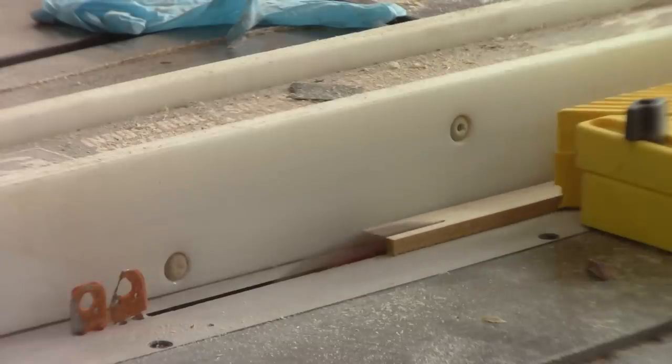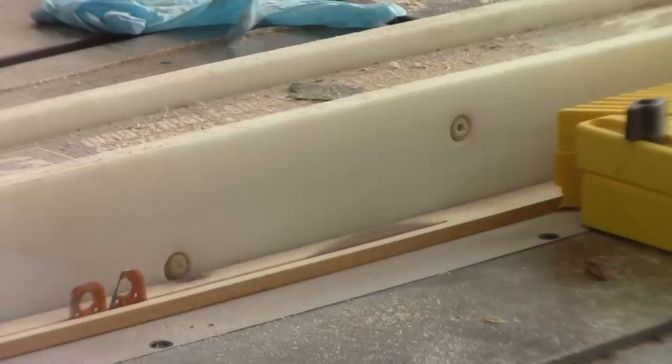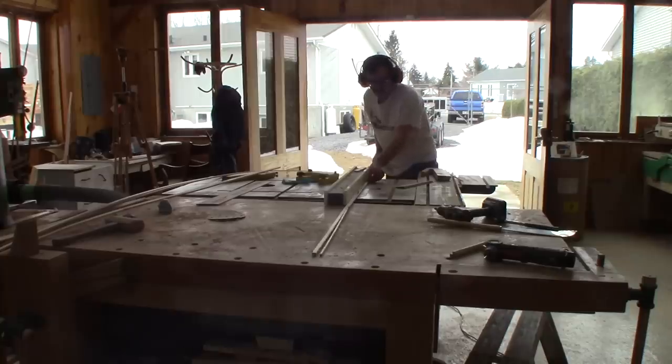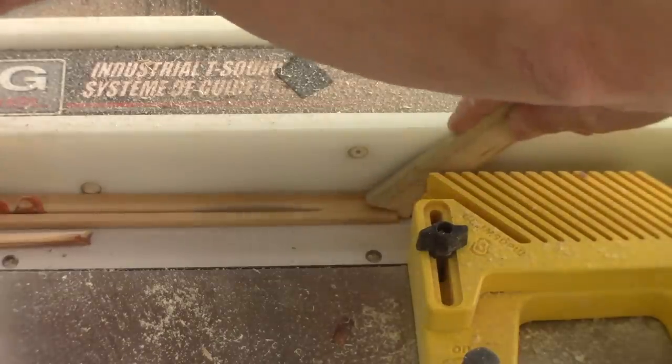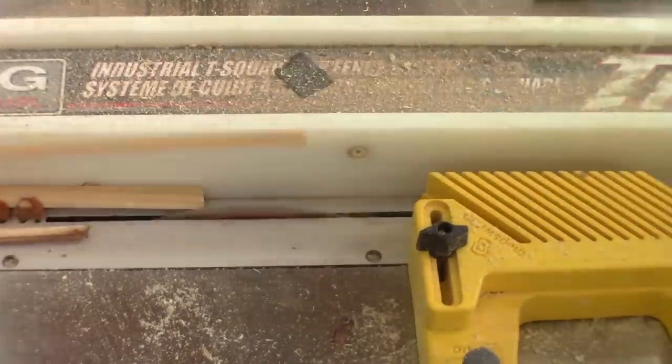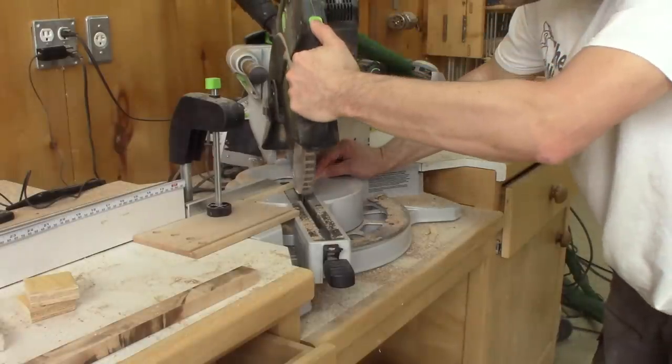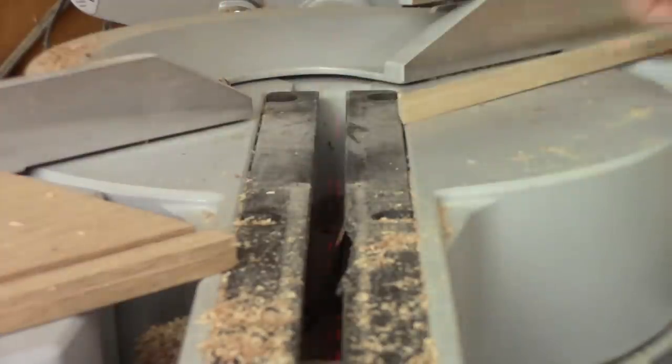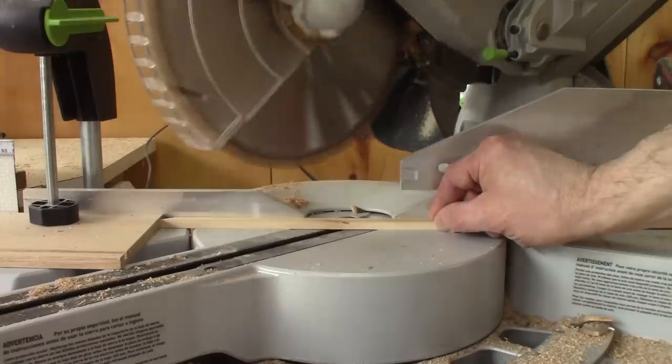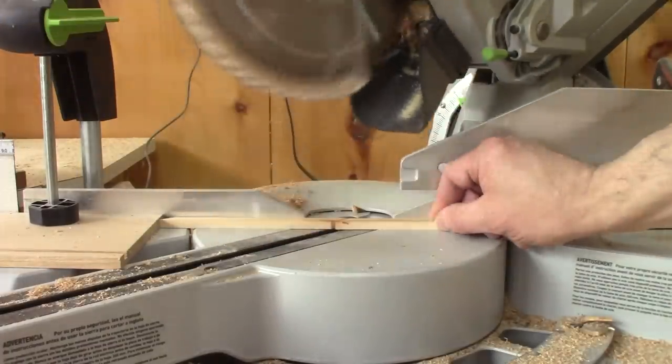When I'm done, I rip the remaining parts of the strips to the width of the groove. Then I cut a bunch of braces. Both ends are cut at 45 degrees.